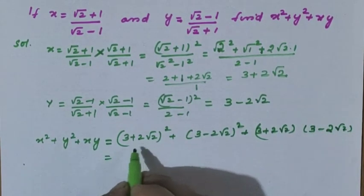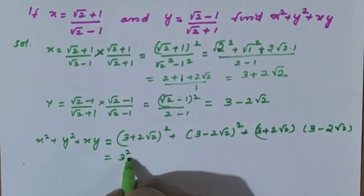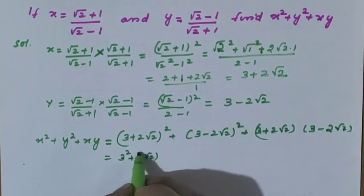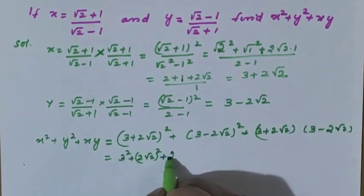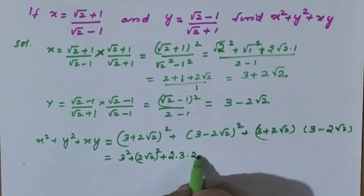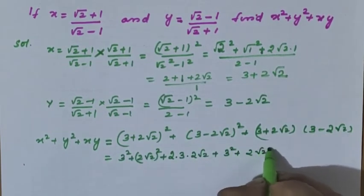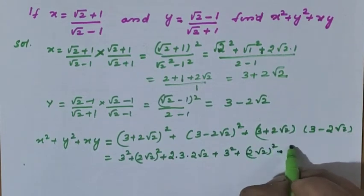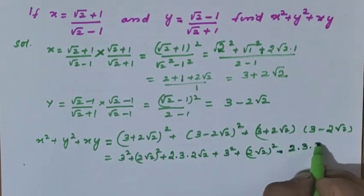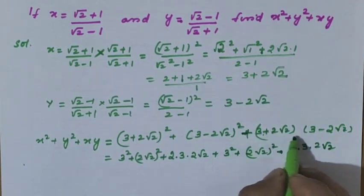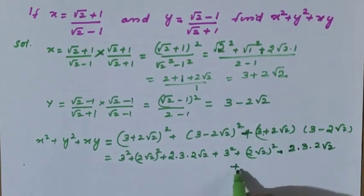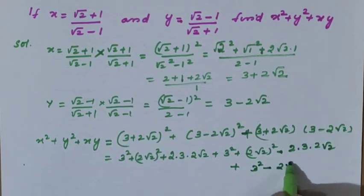For x squared, we use a plus b whole square: 3 squared plus 2 root 2 whole squared plus 2 into 3 into 2 root 2. For y squared: 3 squared plus 2 root 2 whole squared minus 2 into 3 into 2 root 2. For xy, it is a plus b into a minus b, so a squared minus b squared: 3 squared minus 2 root 2 whole squared.